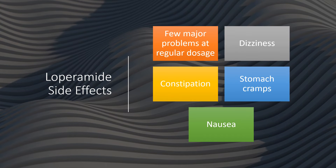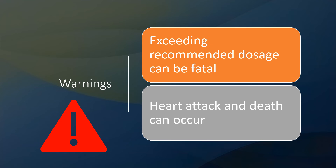What about side effects for loperamide? Typically they are generally mild, especially if you take it at the proper dosage. Dizziness, stomach cramps, and nausea can occur — though those could also be due to the diarrhea itself. Constipation can occur if we take a higher dose than needed or if we take it longer than we need.